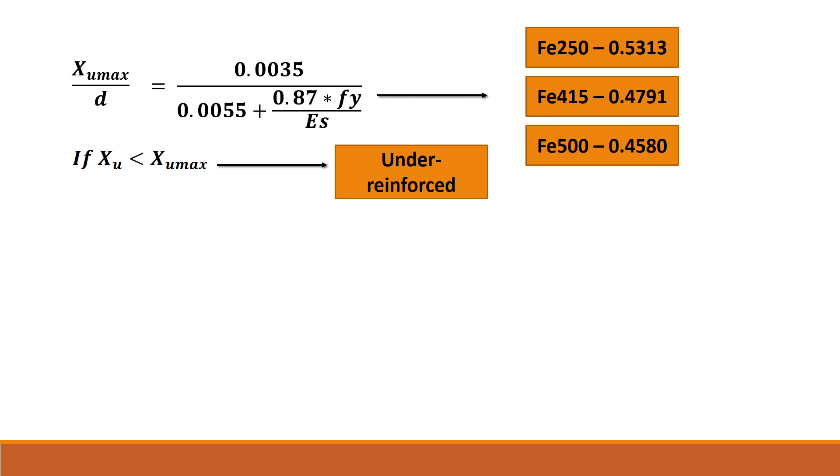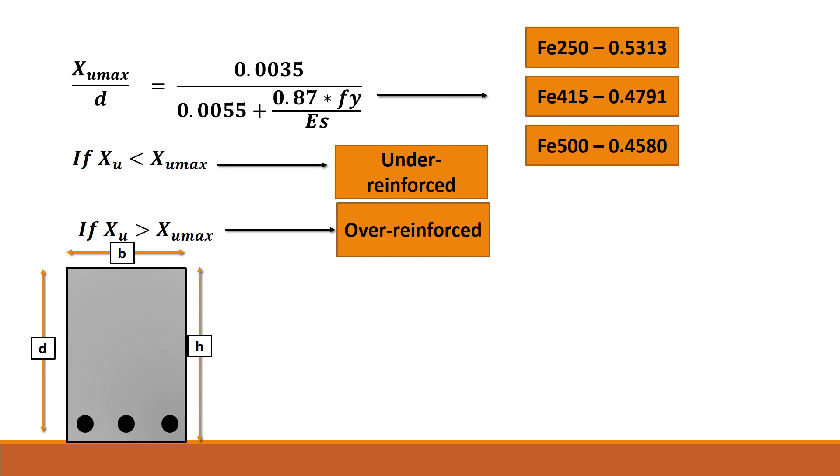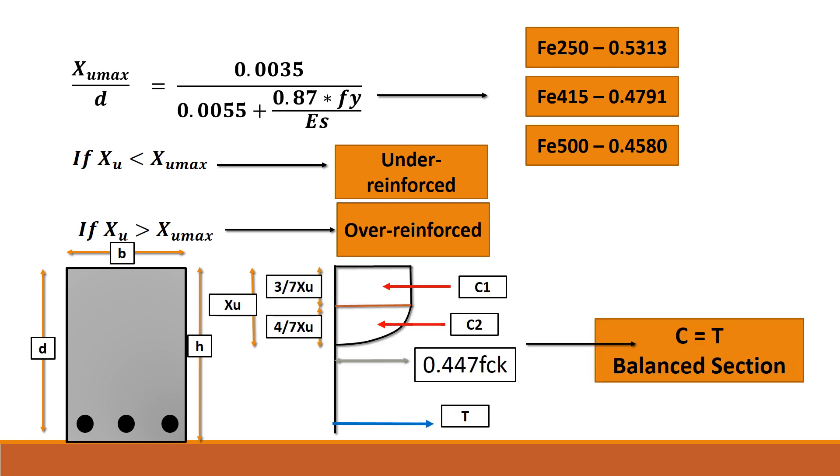If XU is greater than XUmax, the section is over-reinforced with the concrete section cracking first in compression. One could determine the value of XUmax by D and easily then for a balanced section.